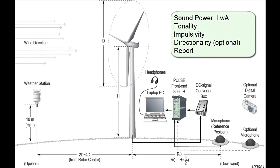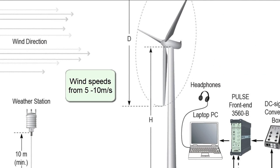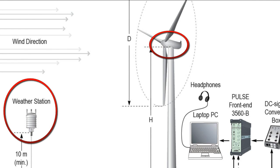Operational and background noise measurements are required at a range of wind speeds from 5 to 10 meters per second, together with weather data and operational parameters from the turbine itself.